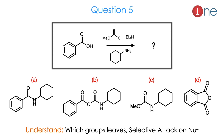Then question number 5. The starting material is a carboxylic acid. The reagents are a formate system with methoxy and chlorine on the other side. Then we are using cyclohexyl amine and base triethylamine. Various choices are given — where the amine attacks. Basically you have to find where the amine attacks, how ring formation or C-C bond formation occurs, and also find the possibility of cyclic ring formation. You have to understand which group leaves and the selectivity of the nucleophile.